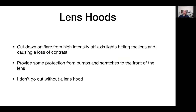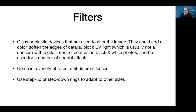Lens accessories: lens hoods cut down flare from high-intensity off-axis lights and provide protection from bumps and scratches. Filters are glass or plastic devices used to alter the image — they can add color, soften edges, block UV light (though with digital this isn't needed as sensor coatings block UV anyway), control contrast in black and white, or create special effects. They come in different sizes, and step-up and step-down rings allow you to use the same filters on different size lenses.